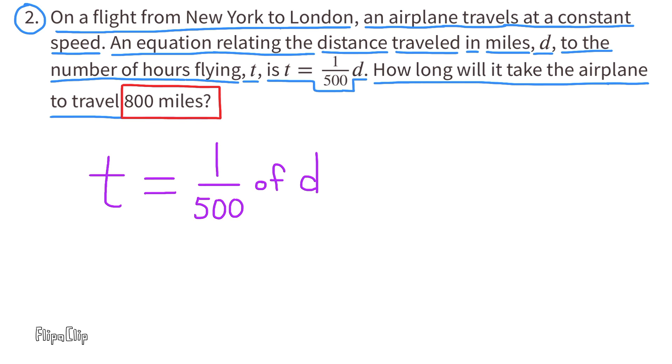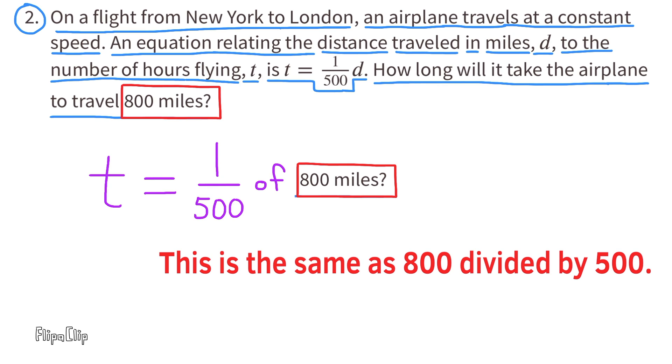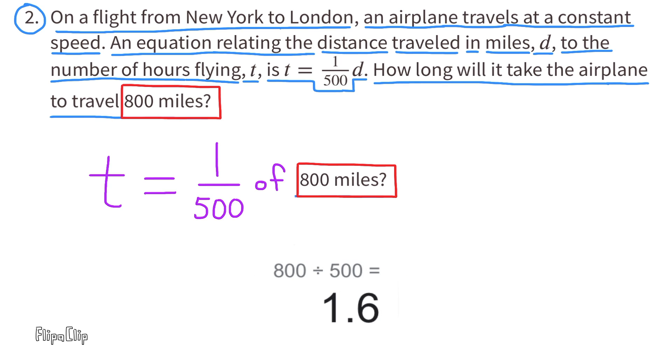This equation means that the time the trip will take would be equal to 1/500 of the distance traveled. Since the distance traveled is 800 miles, the time would be 1/500 of 800 miles, and that's the same as 800 divided by 500. 800 divided by 500 equals 1.6. It will take the airplane 1.6 hours to travel 800 miles.